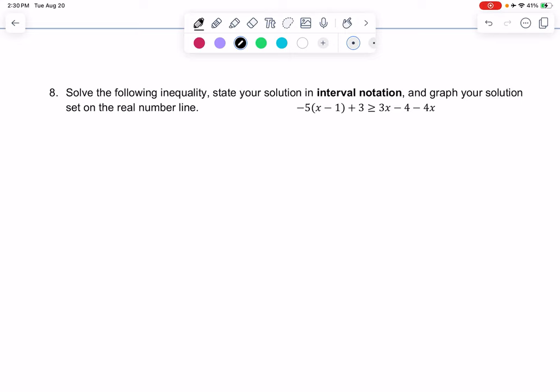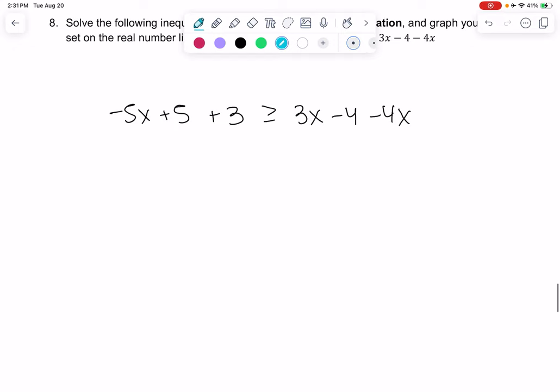For inequalities we're going to do similar stuff. We'll get rid of those parentheses by distributing the negative five: negative 5x and then it becomes positive 5 plus 3. Then this is greater than or equal to 3x minus 4 minus 4x. If I have any like terms that are on the same side I can combine them. So minus 5x plus 8 greater than or equal to negative x minus 4.